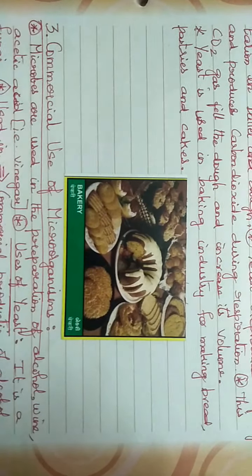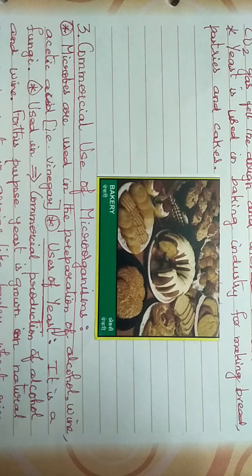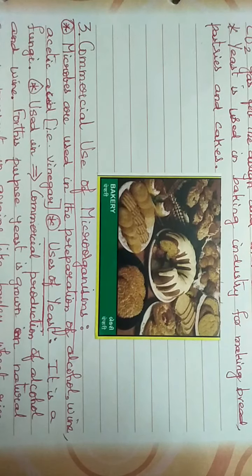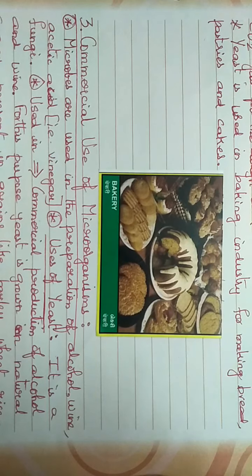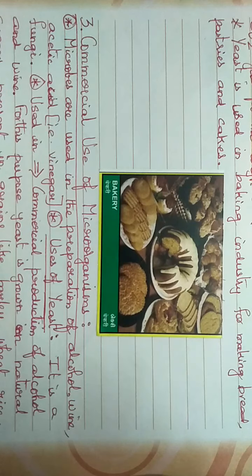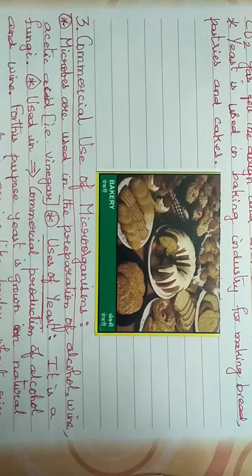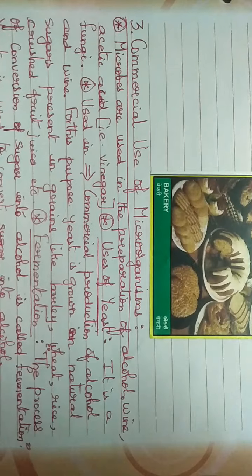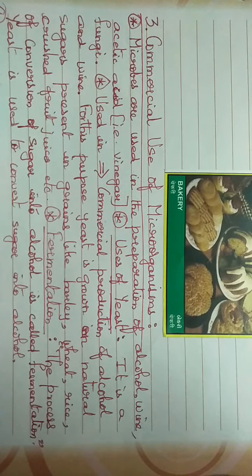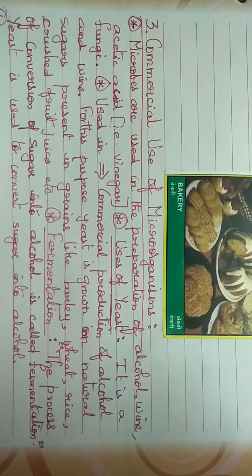The commercial uses of microorganisms: microbes are used in the preparation of alcohol, wine, and acetic acid — that is, vinegar — which is used as a preservative in many items prepared at home. Yeast is a fungi used in the production of alcohol and wine in industries. For this purpose, yeast is grown on natural sugars present in grains like barley, wheat, rice, and fruit juices.